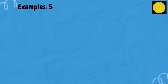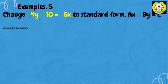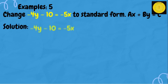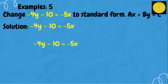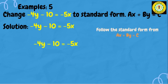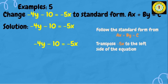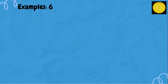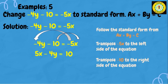Fifth example: change negative 4y minus 10 equals negative 5x to standard form ax plus by equals c. We transpose negative 5x to the left side and negative 10 to the right side. The answer is 5x minus 4y equals 10.